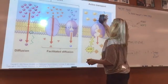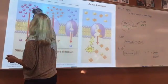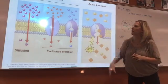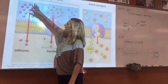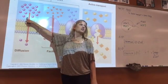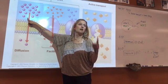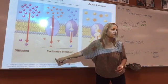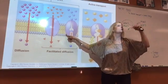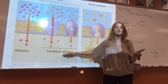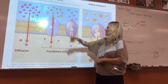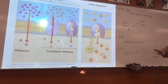To bring it all together: passive transport involves no ATP — molecules move high to low, either diffusing through the membrane if non-polar or small polar, or through facilitated diffusion via proteins for large polar molecules, ions, and water. Active transport, such as the sodium-potassium pump, moves ions against the concentration gradient from low to high with the use of ATP.